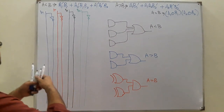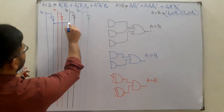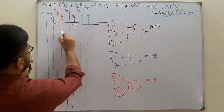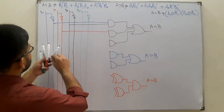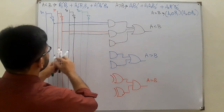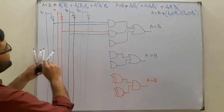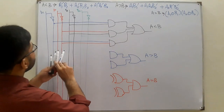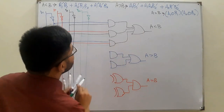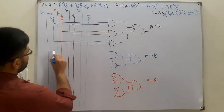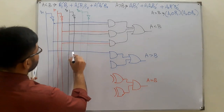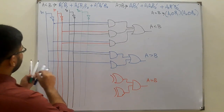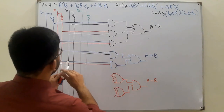Assigning inputs: for A-less-than-B, the first AND gate takes A1-complement and B1. The second AND gate takes A0-complement, B1, and B0. The third AND gate takes A1-complement, A0-complement, and B0. For A-greater-than-B, the first AND gate takes A1 and B1-complement. The second AND gate takes A1, A0, and B0-complement.